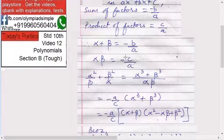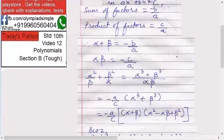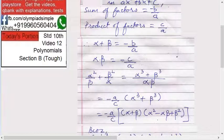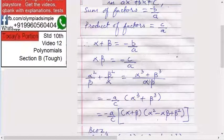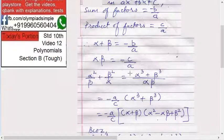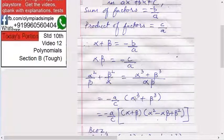What is alpha × beta? That is -c/a. Now this -c/a, a goes above, so it becomes -a/c × (alpha³ + beta³). Check this very neatly and minutely: -c/a over here, a goes above, then it becomes -a/c × (alpha³ + beta³).